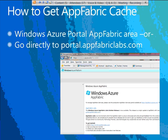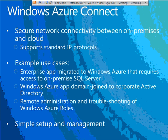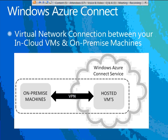To get the cache service, go to the new Windows Azure portal to the AppFabric area and it'll link you to the AppFabric Labs portal, or go directly to portal.appfabriclabs.com and sign up to get access. Now let's talk about Windows Azure Connect — I'll also do a demo. Windows Azure Connect gives you a virtual network connection between the cloud and your on-premise machines using a VPN connection — technology we're all already familiar with and trust.